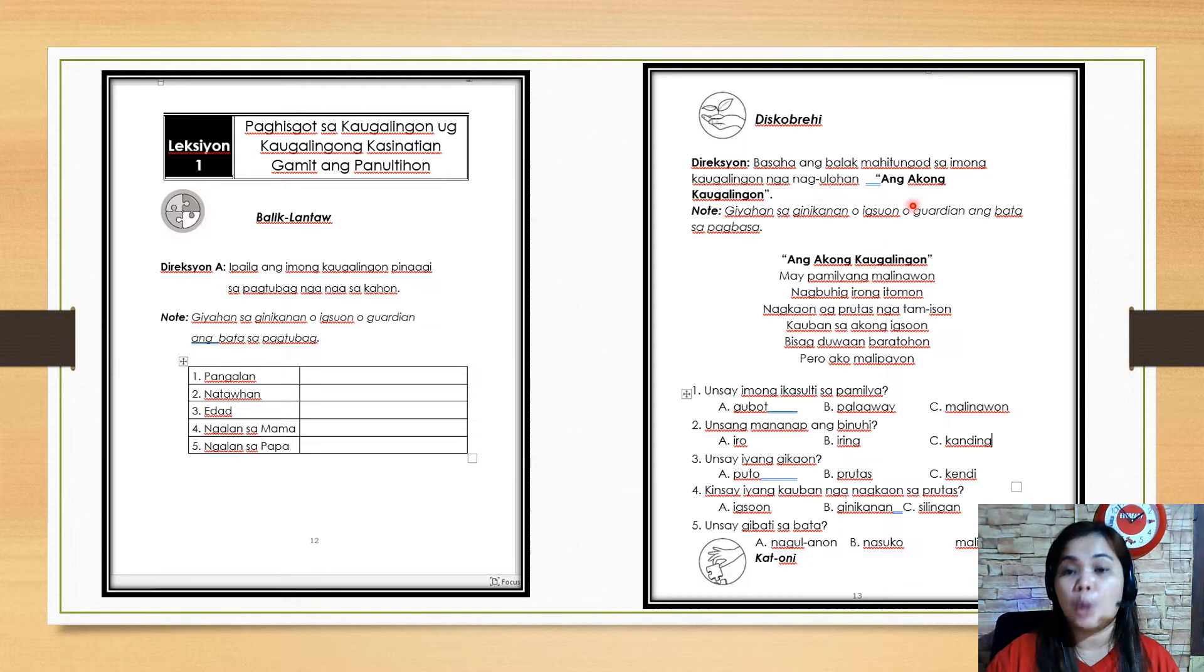Next, let's move on to the next page. Discovery. Direction: you read. Let's read the poem. The title of the poem is ang akong kaugalingon. In English, what's this? I myself. Let me read first the poem. Here it is. Ang akong kaugalingon, may pamilyang malinawon, nagbuhig irong itumon, nagkaon o prutas ngatam ison, kauban sa akong igsuon, bisagduwaan baratuhon, pero ako malipayon.